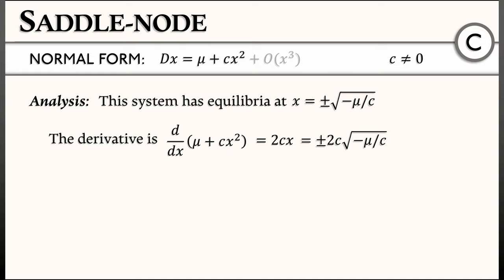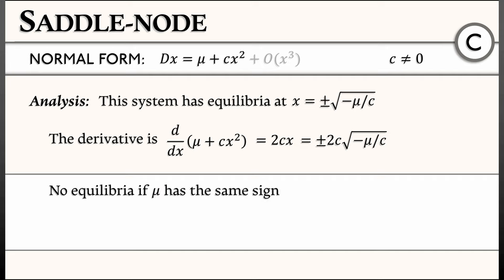With all this information in hand, what can we conclude? We can conclude that this system has no equilibria if mu and c have the same sign. But if we change mu so that it goes to 0,